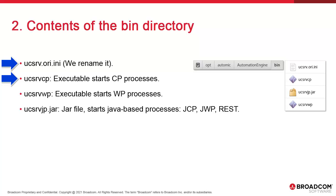CP handles a number of tasks, like incoming non-TLS agent connections. ucsrv.wp starts the work processes; they assume standard workload responsibilities like batch executions. Then there's the ucsrv.jp file, which is the executable for all Java-based processes. We use this to start the JCP, JWP, and REST. JCP handles TLS and Java-based comms. JWP handles Java-based workload tasks like the monitoring page and the web interface. REST handles the REST API, which we do not cover in this course.